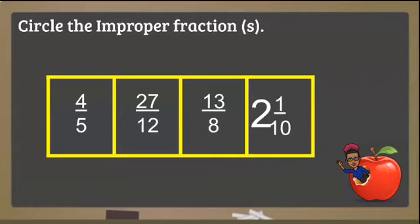Circle the improper fraction or fractions. Again, circle the improper fraction or fractions. 5 fifths and 4 halves.